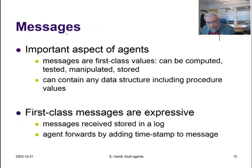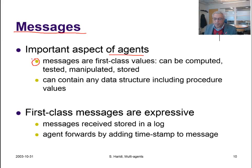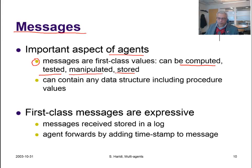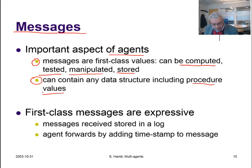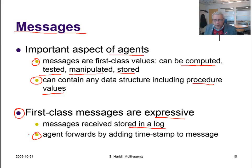Now let's turn our attention to messages. Messages are first-class values in agent-oriented programming. They can be bound to anything, computed at runtime, tested, manipulated, and stored when you receive them. They can contain any data structure, including procedure values, functions, or objects. First-class messages are expressive because you can store them in data structures, modify them, and forward them further. You can build a sequence of filters on these messages, modifying them until they arrive at the final destination.